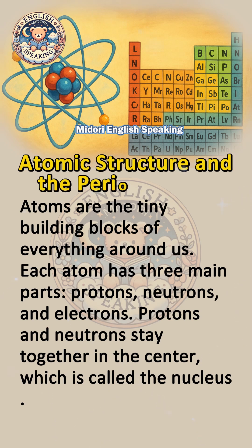Atomic structure and the periodic table. Atoms are the tiny building blocks of everything around us. Each atom has three main parts: protons, neutrons, and electrons.